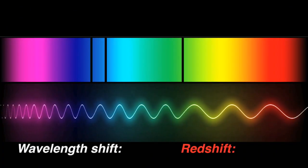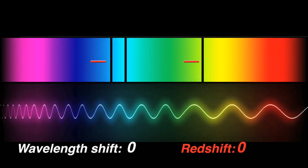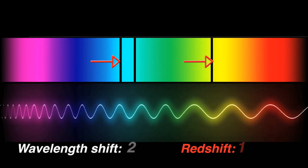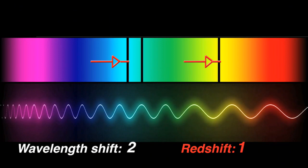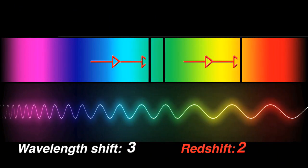If signature absorption and emission lines of a galaxy's spectrum have shifted to wavelengths that are twice as long, the galaxy has a redshift of one. If the signature lines have shifted to wavelengths that are three times as long, the galaxy has a redshift of two.